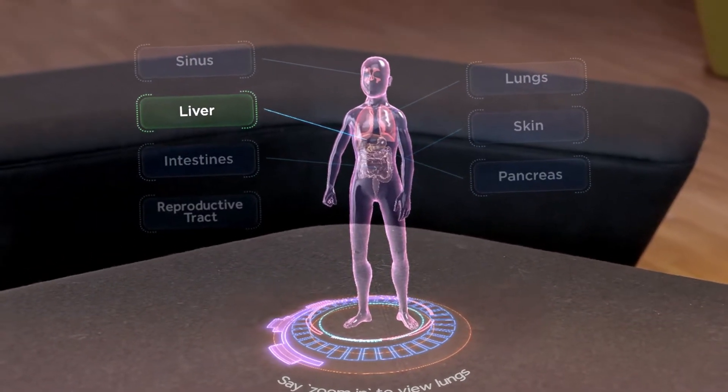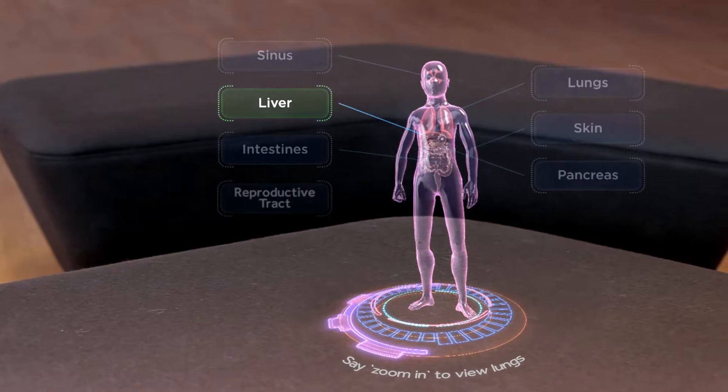Liver. Blockage of ducts in the liver prevents digestive enzymes from reaching the gut.